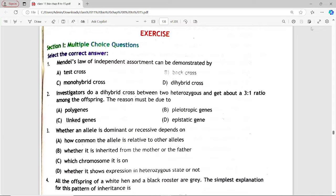So let's start. First MCQ: Mendel's law of independent assortment can be demonstrated by? Options are: test cross, backcross, monohybrid cross, dihybrid cross. Answer is option A, test cross.